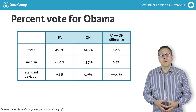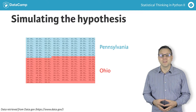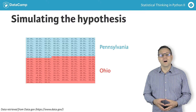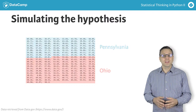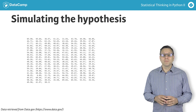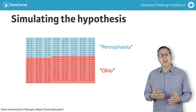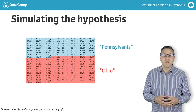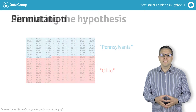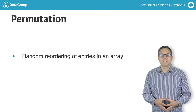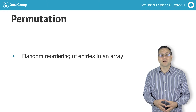To resolve this issue, we can simulate what the data would look like if the county-level voting trends in the two states were identically distributed. We can do this by putting the Democratic share of the vote for all of Pennsylvania's 67 counties and Ohio's 88 counties together, then ignoring what state they belong to. Next, we randomly scramble the ordering of the counties, then relabel the first 67 to be Pennsylvania and the remaining ones to be Ohio — redoing the election as if there were no difference between the two states. This technique of scrambling the order of an array is called permutation, and it is at the heart of simulating a null hypothesis where we assume two quantities are identically distributed.